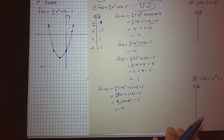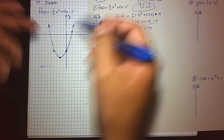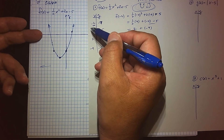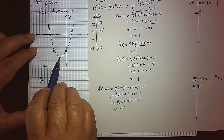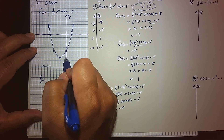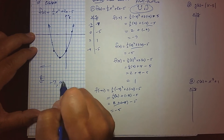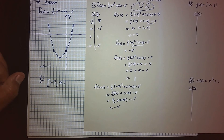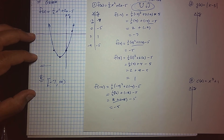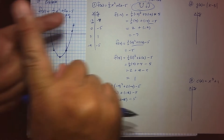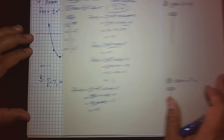There is our graph of f(x) = one half x-squared plus 2x minus 5. The domain is all real numbers — the x-axis is covered entirely. But the range is not everything because we do bottom out. Looking at the graph, it starts at negative 7 and goes all the way to positive infinity. So the range is negative 7 to positive infinity. That's how we graph a nonlinear function and use that graph to find the range.